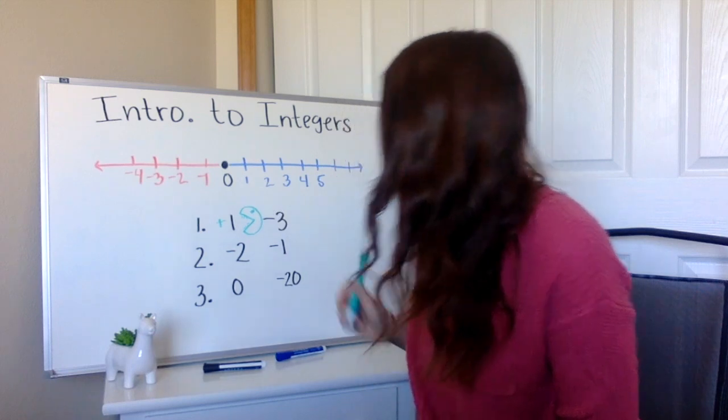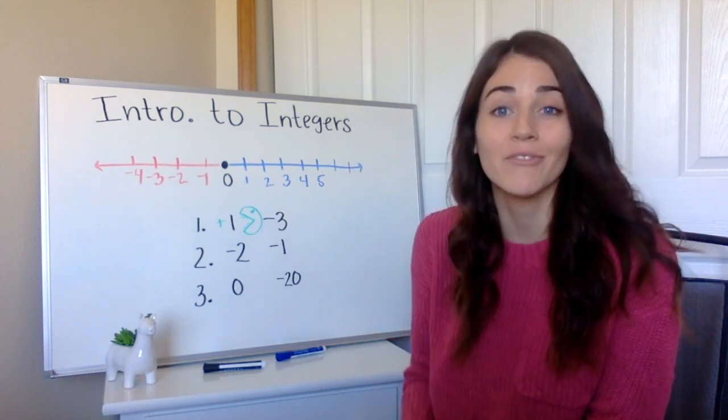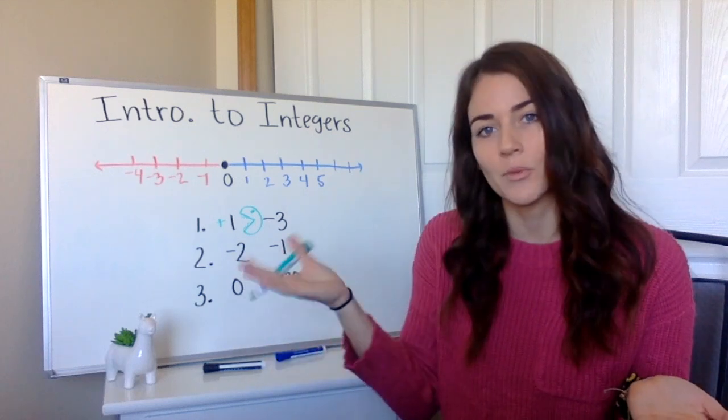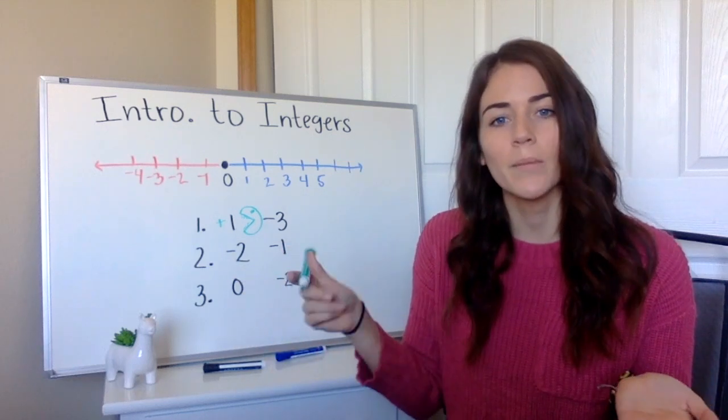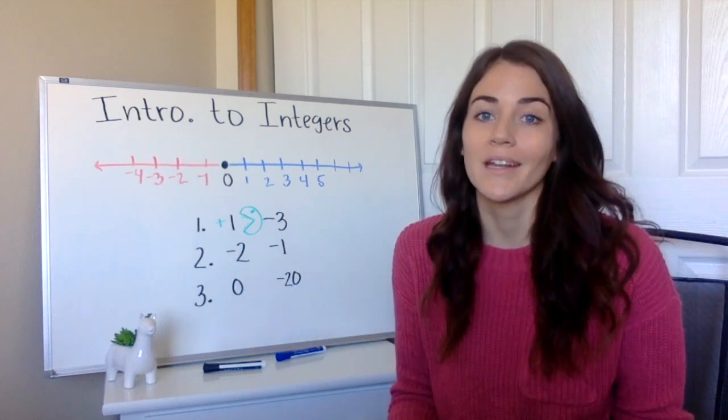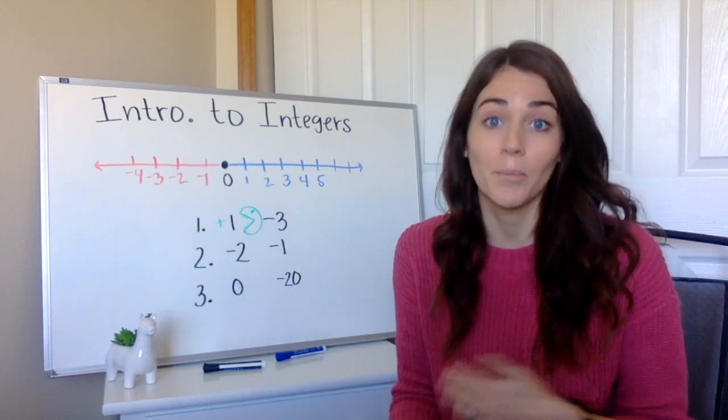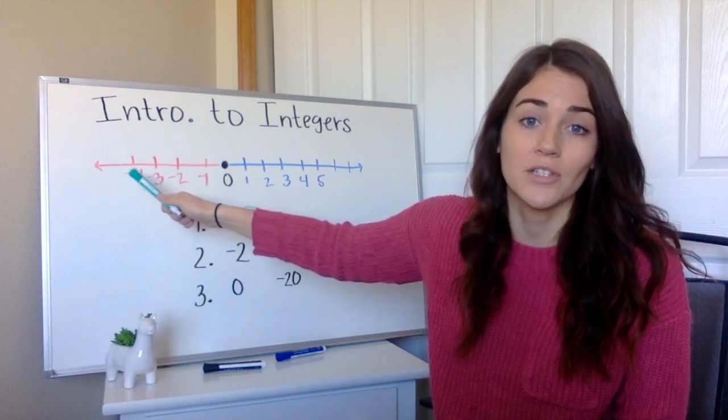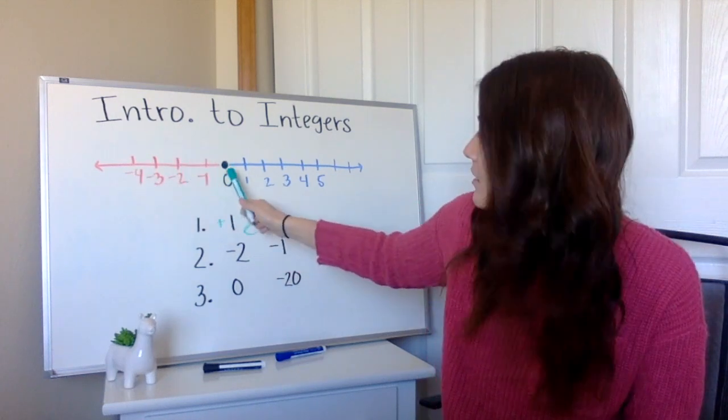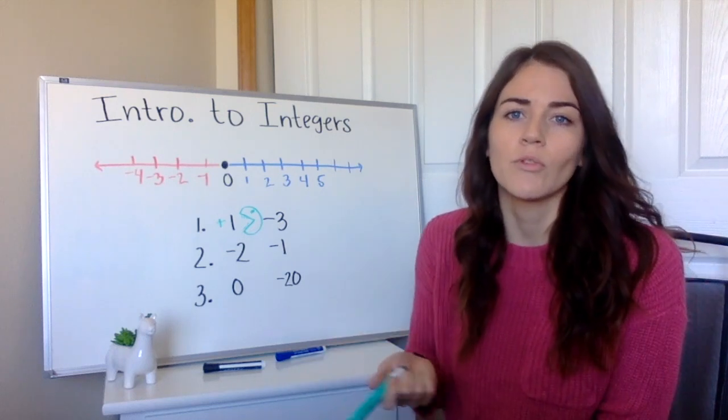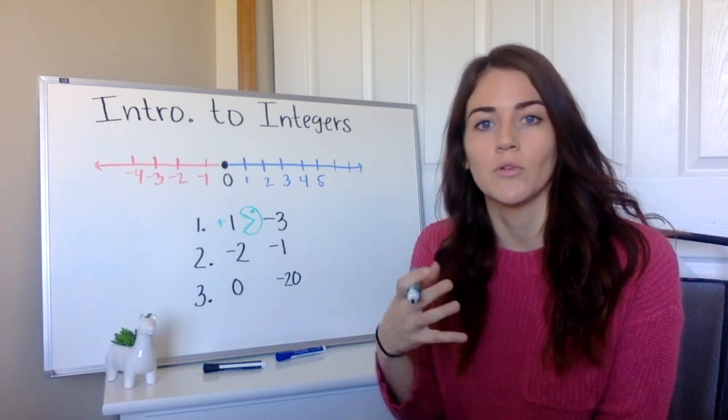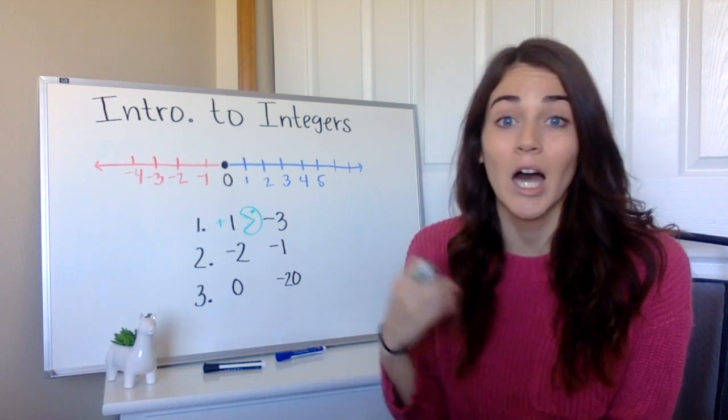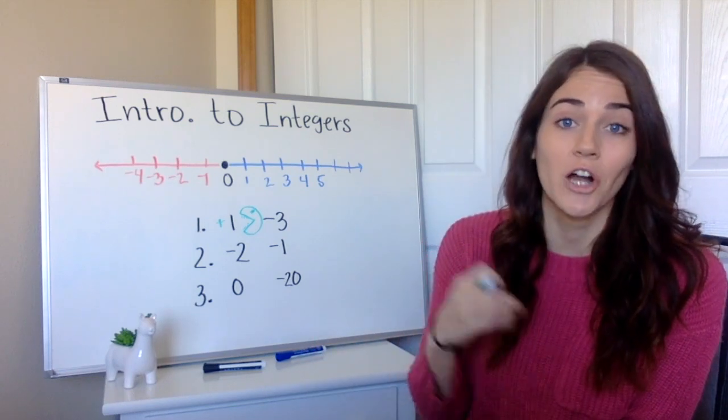Next one, we are comparing two negative numbers this time. This is where it can get a little trickier. If you have a positive and a negative, you always know the positive is going to be bigger. But what about when we have two negatives? With the negatives, you really can think of it as the opposite of positives because all of these numbers over here are just a reflection or the opposite of all these numbers over here.